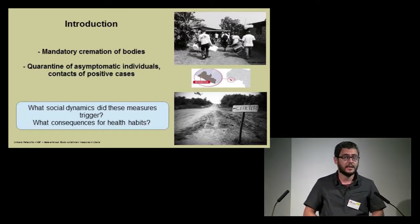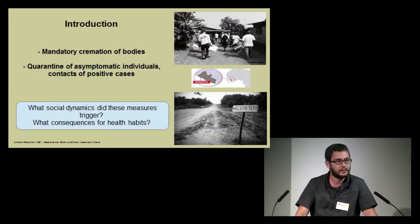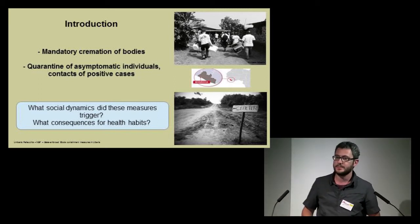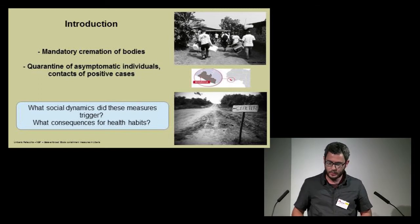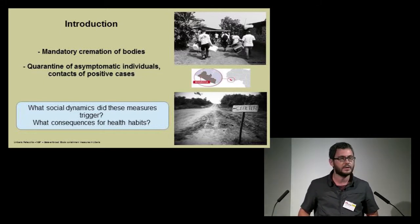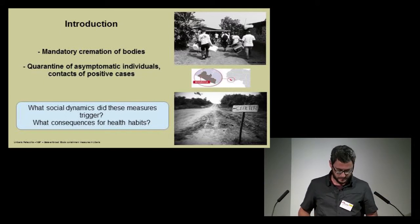In August 2014, the government of Liberia decided, together with international partners, to implement two main emergency measures to control transmission. The first was mandatory cremation of bodies positive to Ebola or highly suspected, and the second was quarantine of asymptomatic individuals — contacts of positive cases. These measures were quickly implemented as the fastest ways to curtail uncontrolled transmission. Cremation was replaced only in December 2014 with dignified burials, while quarantine continued until the end of the outbreak.